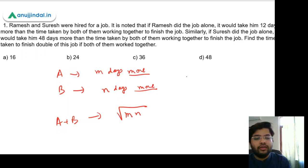It's that simple. For example, in this question, the time taken would be square root of 48 times 12 because it took Ramesh 12 days more and Suresh 48 days more. So 12 times 48, and you take the under root of this. So 48 times 12 gives us 576, and under root of 576 is 24.